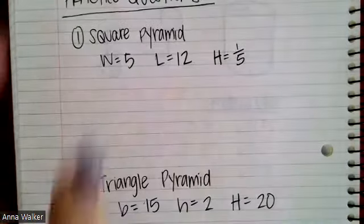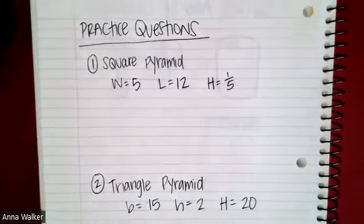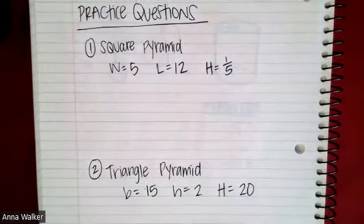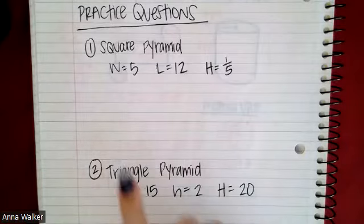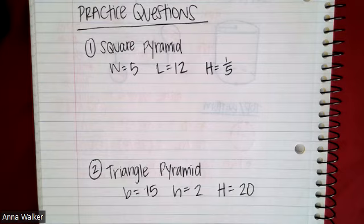All right, here are your practice problems. You're going to find the volume of each. So the first one is a square pyramid and the second one is a triangular pyramid. I have put the dimensions with length, height, base, height, and height below. You can choose whatever units you want, or you could just put units cubed at the end if you would like to do so. Remember you can always check your answers in the table of contents. Ask your teacher for help. And as always, I hope y'all have a good day. Bye.